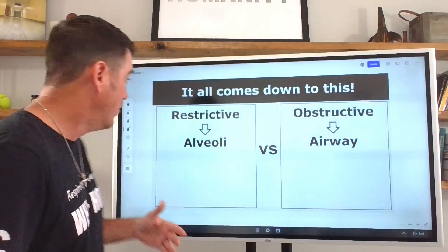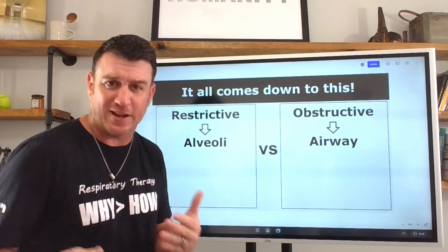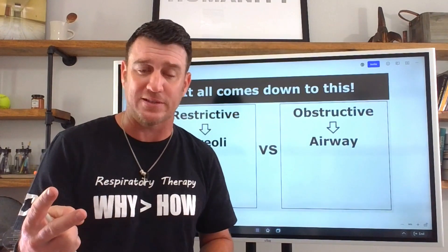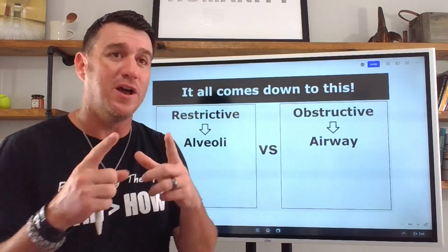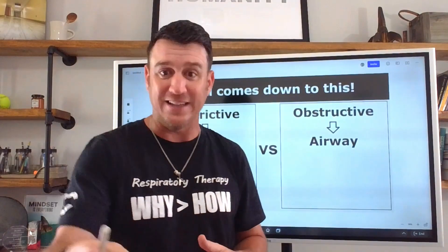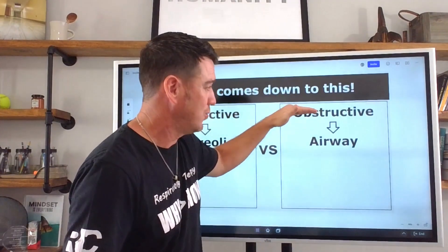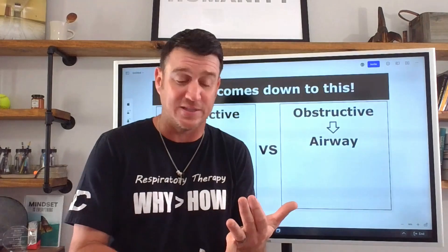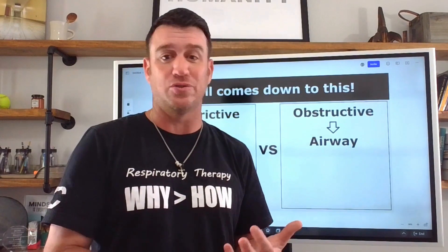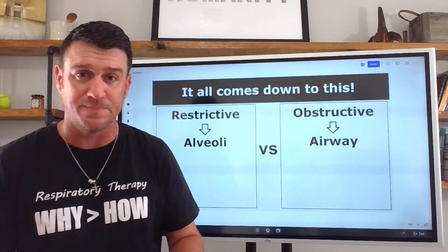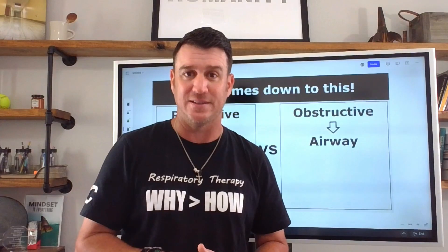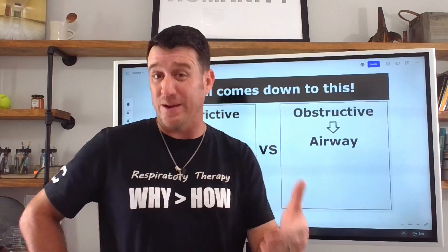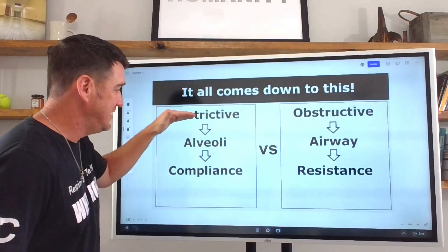When we talk about restrictive diseases affecting the alveoli, we're talking about things like pneumonia, ARDS, pulmonary fibrosis, pneumothorax, pleural effusion, atelectasis, and hemothorax — things that actually impact the alveolar units. When we talk about obstructive pulmonary disorders, we're talking about airway disorders: excessive mucus, smooth muscle constriction — things like asthma, emphysema, chronic bronchitis, cystic fibrosis, and bronchiectasis.